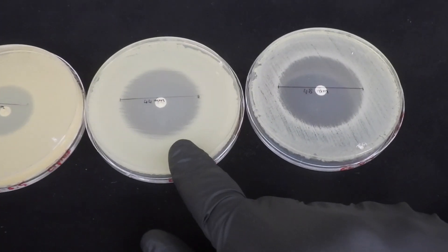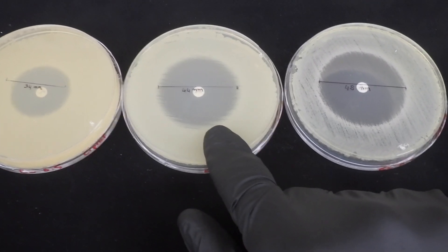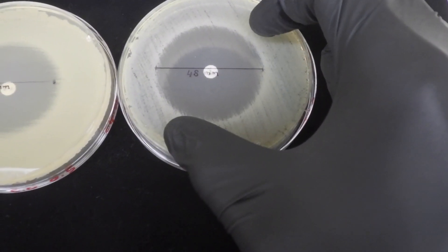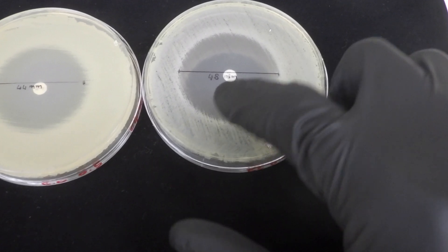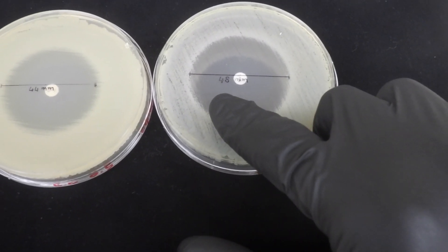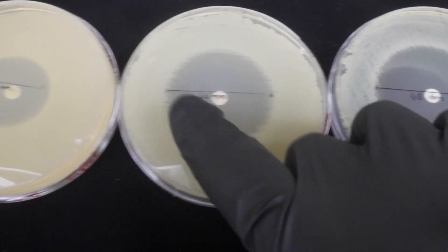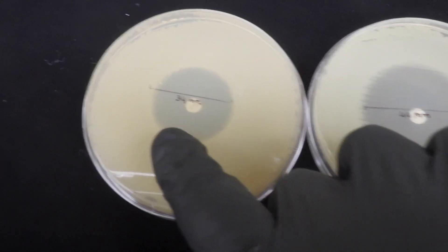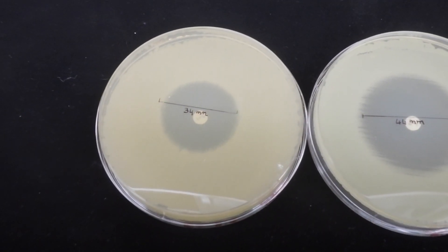In the center we have our reference conditions where the Mueller-Hinton agar is four millimeters thick. And then on the right we have thin agar where the ciprofloxacin can diffuse out further. You can appreciate that from our thin agar where we have a zone diameter of 48 millimeters to 44 with our reference condition, all the way down to 34 with our thick agar, the thickness of the product does have a true impact on the result.